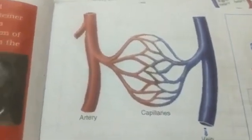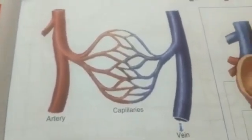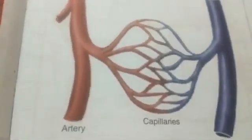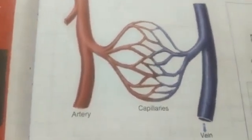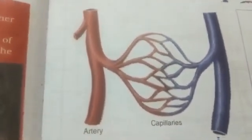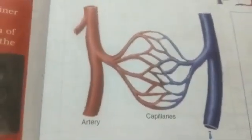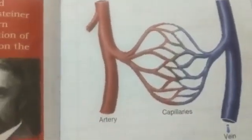Let's start reading about blood vessels. Blood vessels are hollow tube-like structures that transport blood throughout the body. These are like pipes through which blood flows throughout the body. There are three types.